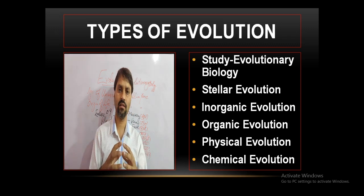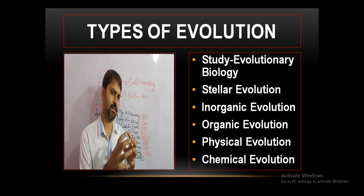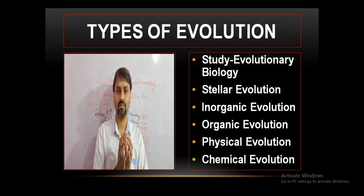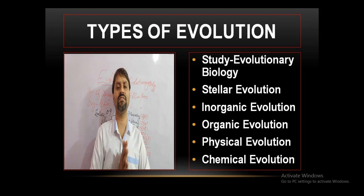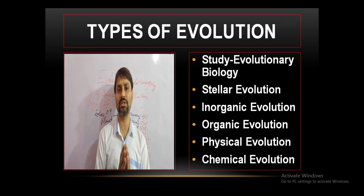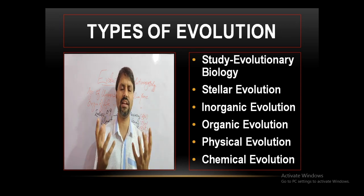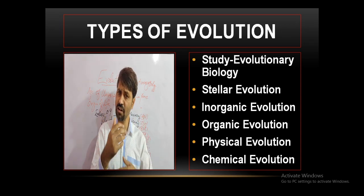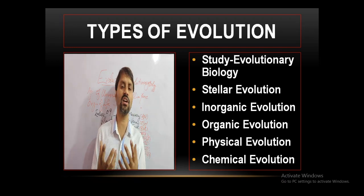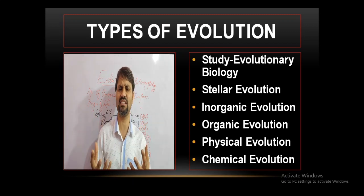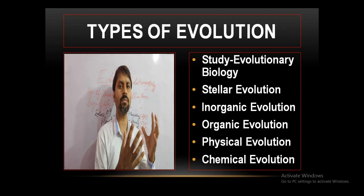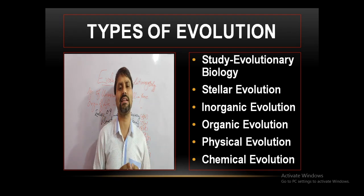Depending upon which aspect of nature we are studying, evolution is of different kinds. One is stellar evolution. The word 'stellar' is related to stars and planets. When we unfold the history of formation of stars, galaxies, and planets, that particular branch is called stellar evolution.